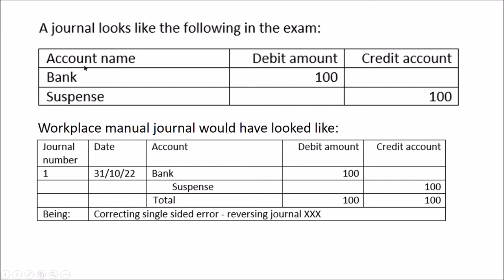In the exam, the journal is going to look like this: detail such as bank and whatever the account is, the debit amount, and the credit amount — you may or may not get a date. In the real world, a journal looks more detailed: a journal number tracked back to workings, the date, the account, debit and credit amounts totalled up to check the journal balances, and an explanation of what's happening. It might even include a 'posted by' field.